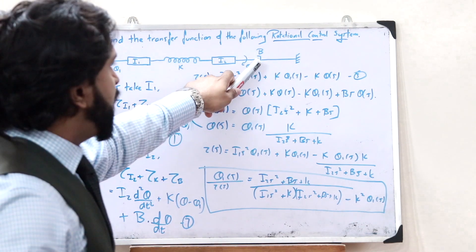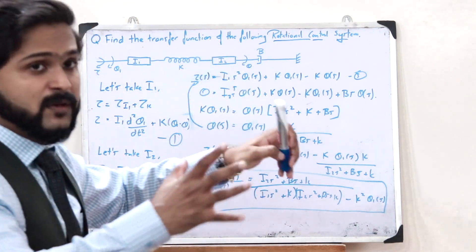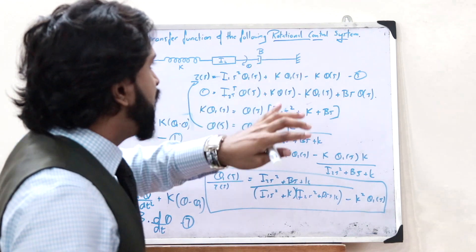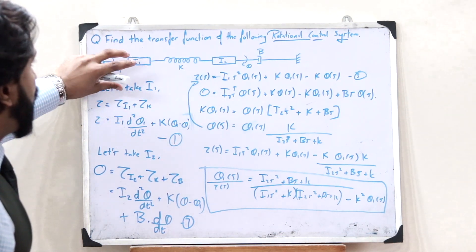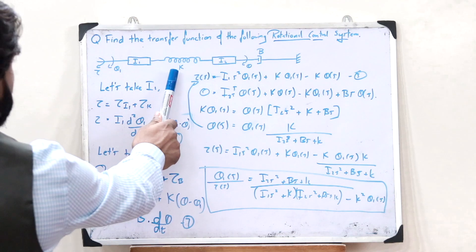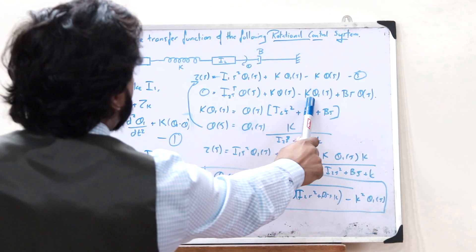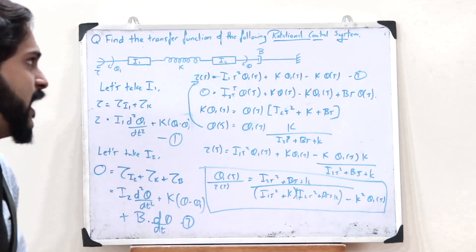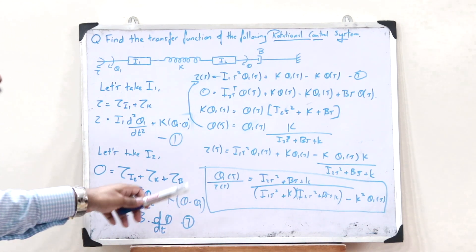A few things to keep in mind: when we took the restoring torque on this particular dashpot, we did not take the subtraction between theta and theta1. That is because one edge of this particular damper is connected to a wall. Only if there are two displacements present on both sides do we take the difference in their particular displacements. In the case of this particular spring, there is an angular displacement on this side and on the other side as well — that is why we take the subtraction: K into theta1 minus theta, and K into theta minus theta1. In the case of the damper, there is only one displacement, so we take B into d theta by dt.